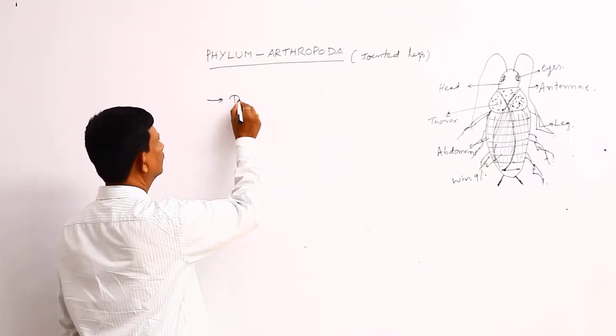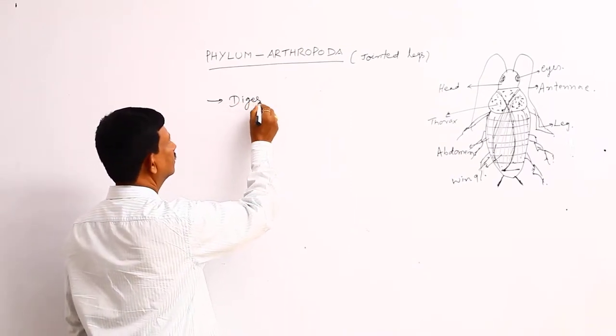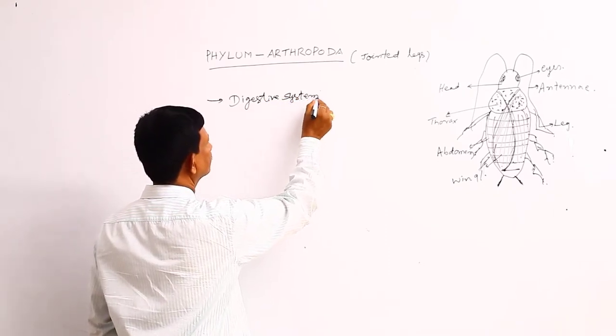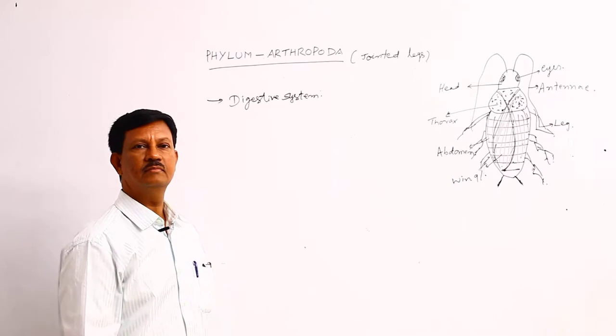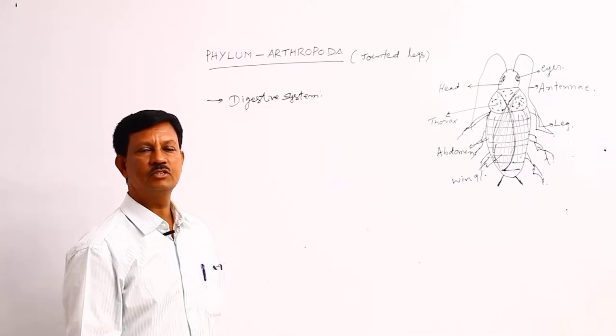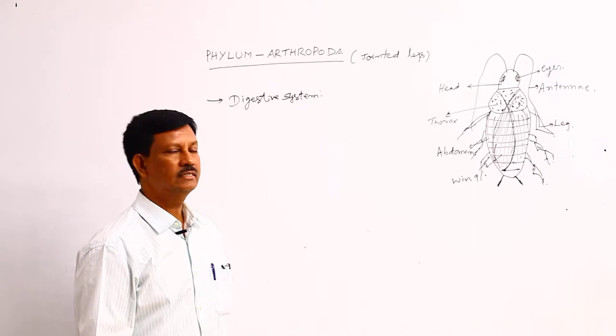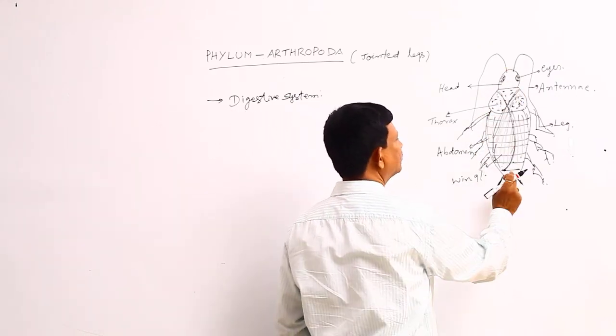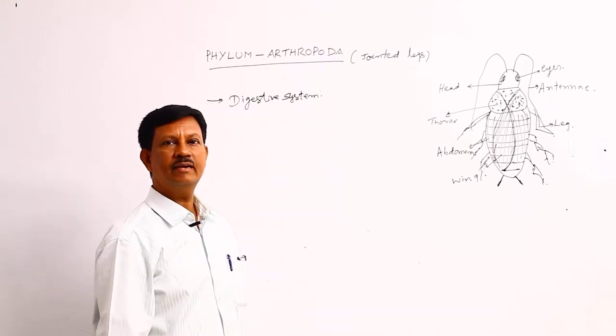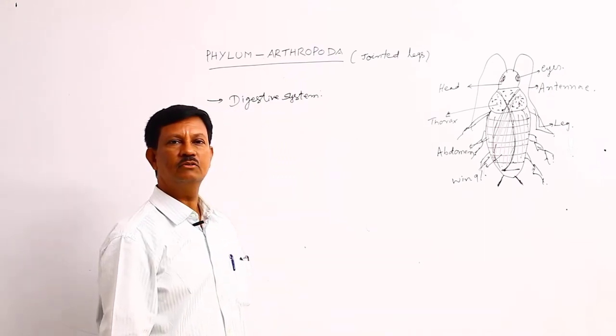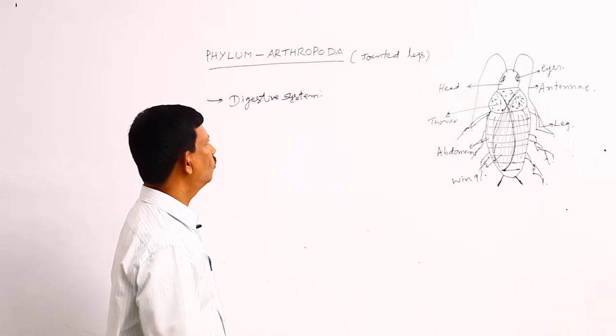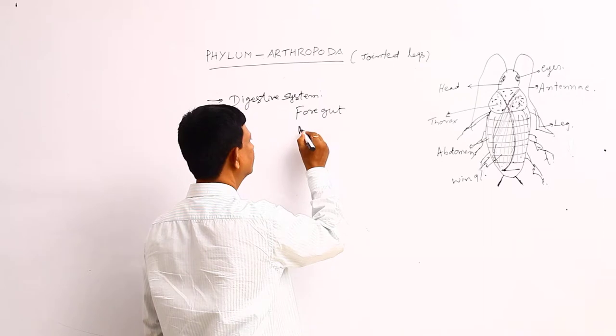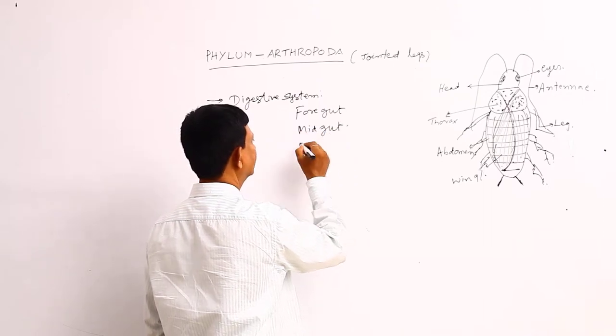The digestive system of Arthropoda consists of an alimentary canal and digestive glands. The digestive system starts with the mouth and ends with the anus. The alimentary canal is divided into three parts: foregut, midgut, and hindgut.